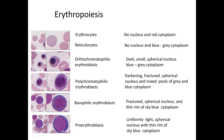Next is the polychromatic erythroblast — 'poly' meaning more than one color. You get the pink of the hemoglobin as well as the blue of the ribosomes. The nucleus is a little less dark than the orthochromatic and is larger in size, varying in the polychromatic erythroblast. After that, the basophilic erythroblast has a somewhat fractured nucleus with dark and light areas and a thin rim of dark blue cytoplasm.